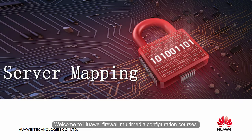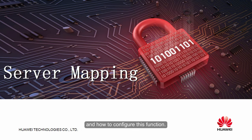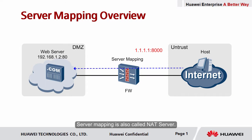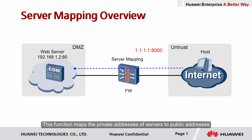Hello everyone, welcome to Huawei Firewall Multimedia Configuration Courses. This video covers the firewall server mapping function and how to configure it. Server mapping is also called NAT Server. This function maps the private addresses of servers to public addresses, so that users on the internet can access the servers on private networks.